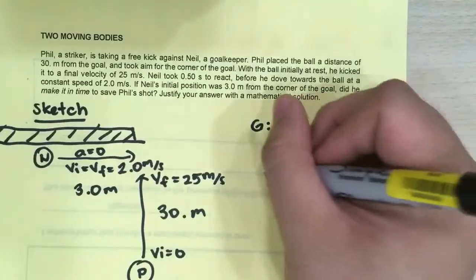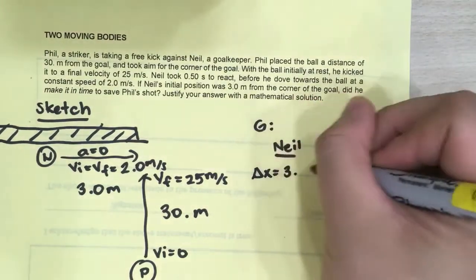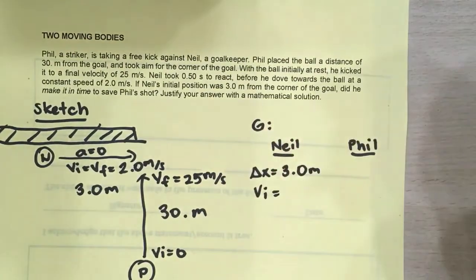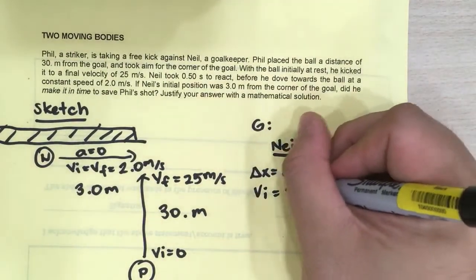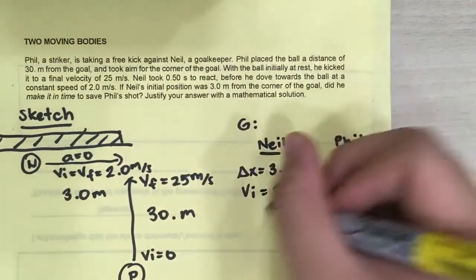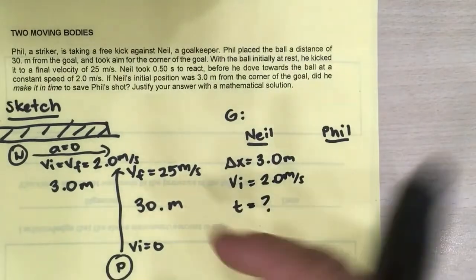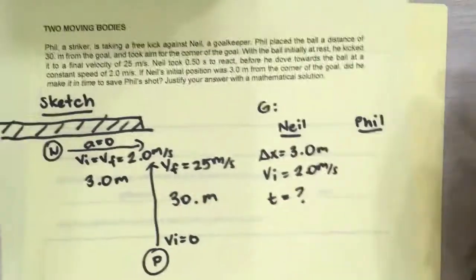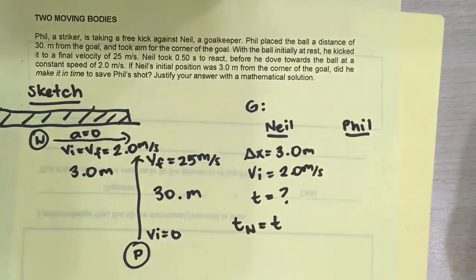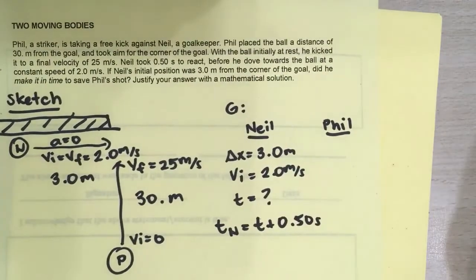So let's take a look. For Neil, we know that we have the delta X of Neil. He has to travel the 3 meter width of the goal. We also know that he travels at a constant rate of 2 meters per second. And we know that we don't have the time. We're looking if what is Neil's time. But there's also another catch. It took him 0.50 seconds to react. So we know that Neil's time is going to be the time that we solve plus 0.50 seconds.